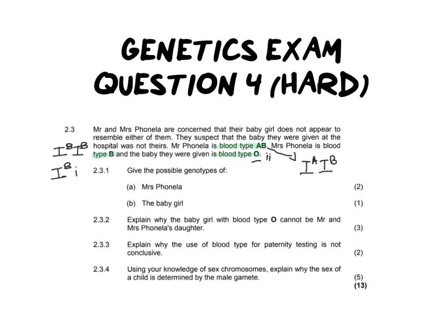Now looking at the baby's blood group — two lowercase i's — the only way that's possible is if they inherited a lowercase i from mom and a lowercase i from dad. It may be possible to get a lowercase i from mom, but looking at dad, he does not have a lowercase letter i. So it's definitely not his child. It may be mom's child, but there's no certainty yet. Already we can tell this is not their child, so now let's get into the actual questions.